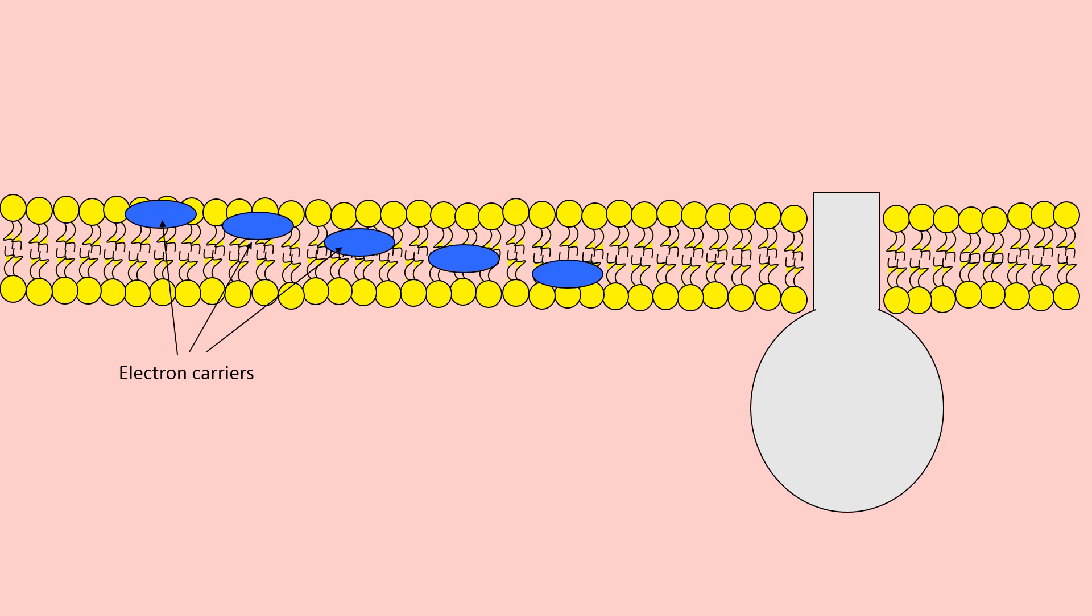The big gray object on the right hand side is representing a stalked particle or ATP synthase enzyme. During glycolysis, the link reaction, and Krebs cycle, we have generated an awful lot of reduced NAD and reduced FAD. This is where they come into play now because they are going to release those hydrogen atoms. At the same time, these hydrogen atoms split into protons H+ and electrons e-.